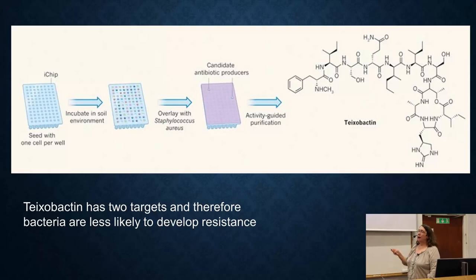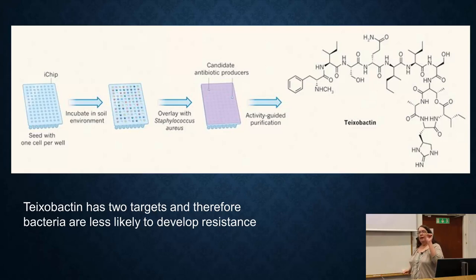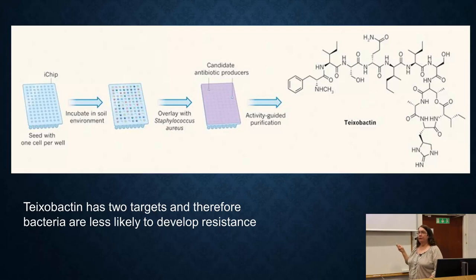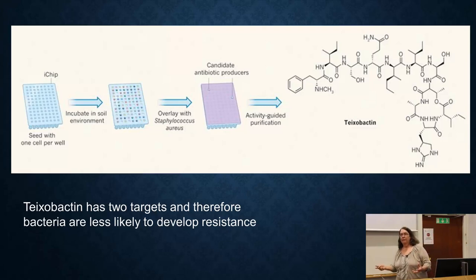Researchers then take the i-chip, wash off the mud, and overlay it with bacteria — in this case Staphylococcus aureus — in a gel placed on top without opening the chip, then incubate it. At certain locations in the chip, Staphylococcus aureus didn't grow, indicating that an antibiotic might be being produced by the bacteria in that location. They identified that bacteria and eventually isolated the compound teixobactin. Teixobactin is really interesting because it has two targets in the bacterial cell, which makes it less likely to evolve resistance.